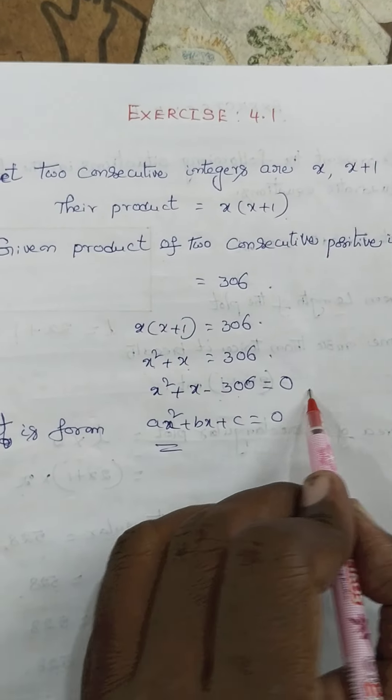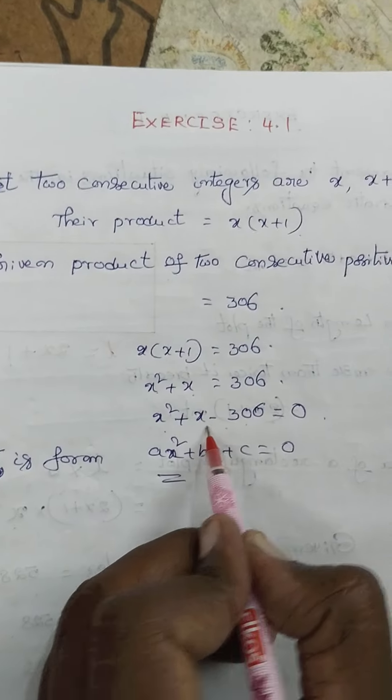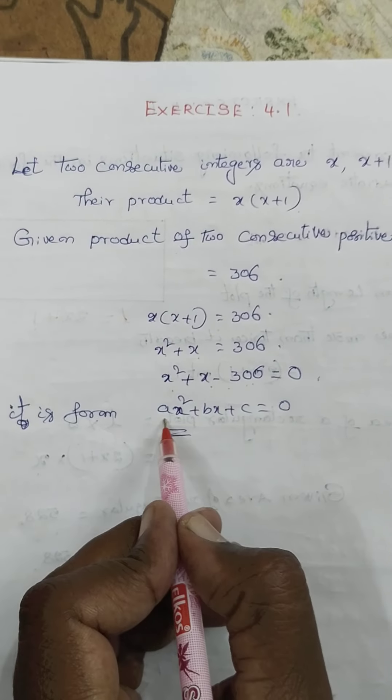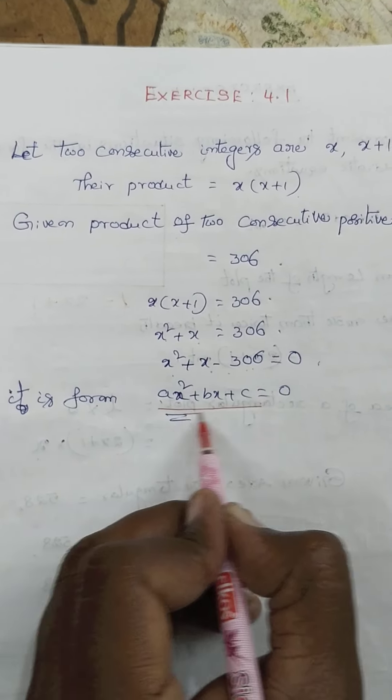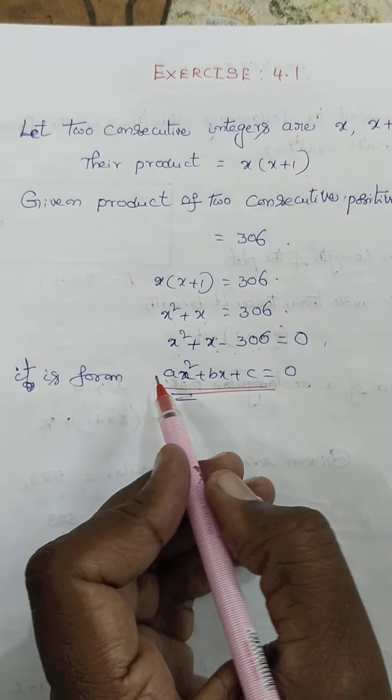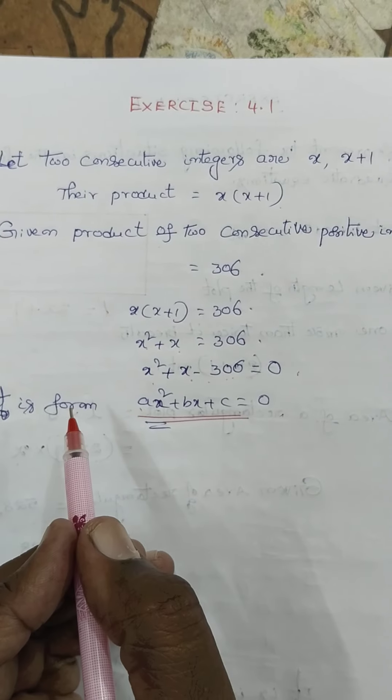So we get x square plus x minus 306 equals zero. This is in the form of ax square plus bx plus c equals zero. This is the quadratic equation form.